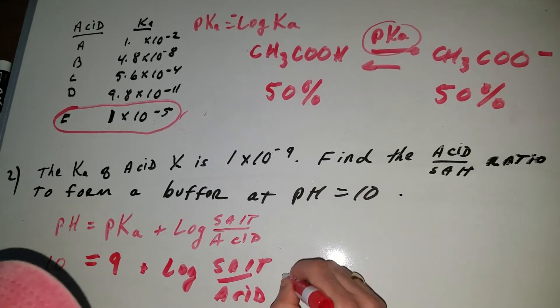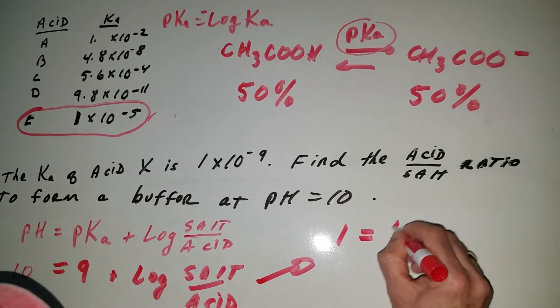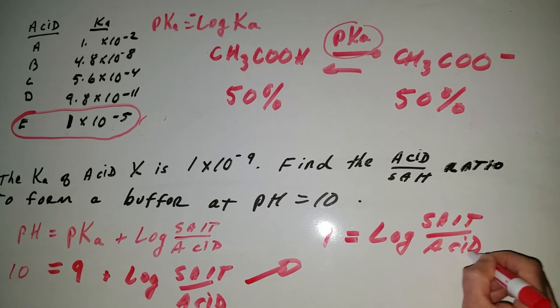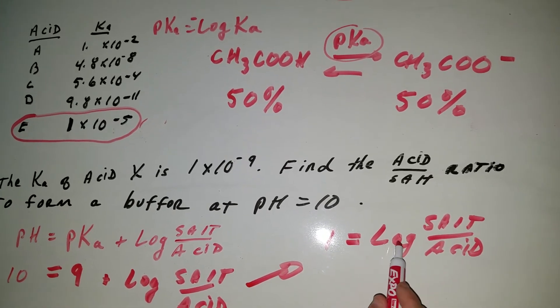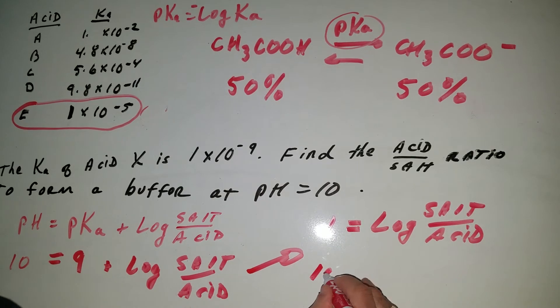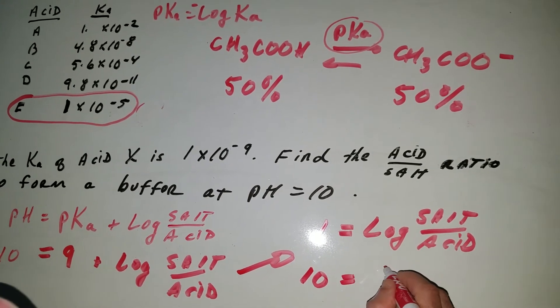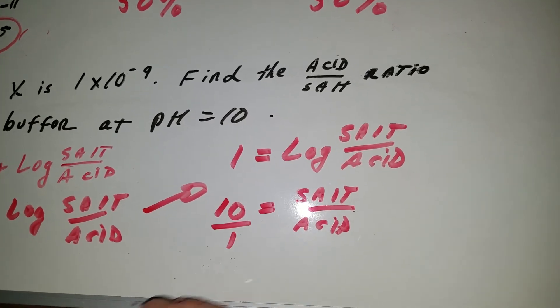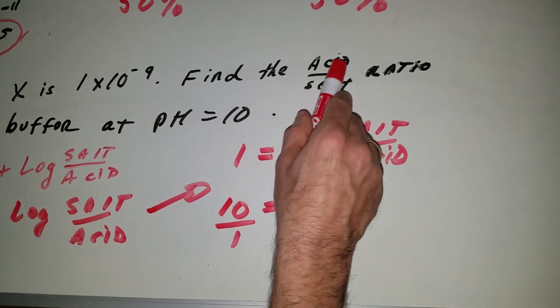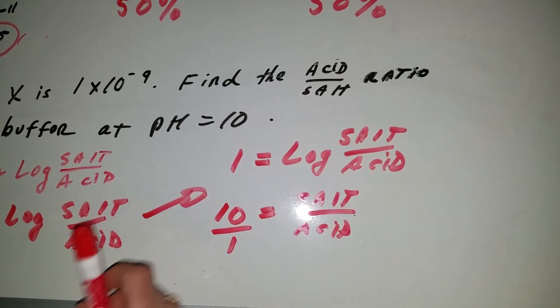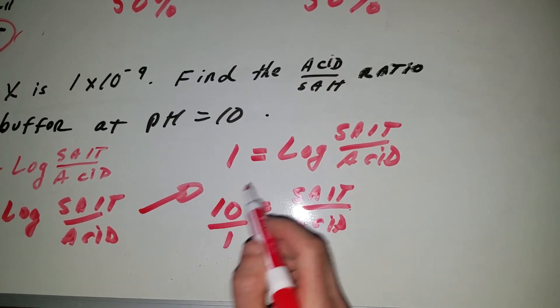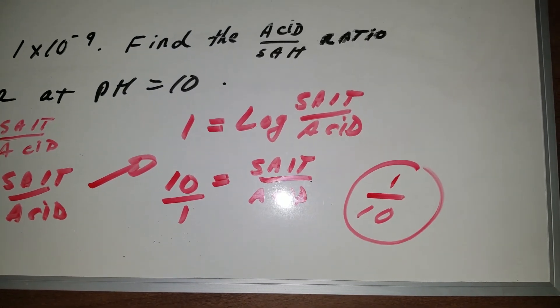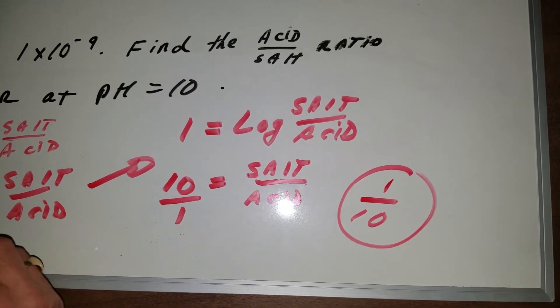Subtract 9 from both sides. That gives me 1 equals the log of the salt over the acid. Now what we got to do is to take what we call an anti-log. The anti-log of 1 is 10. So that means we get 10 parts salt and 1 part acid. So we have a 10 to 1 ratio. But be careful, they're not asking for the salt acid ratio but the acid salt ratio. So it would be the reciprocal of this. So the answer would be 1 over 10, meaning there's 1 part acid and 10 parts salt.